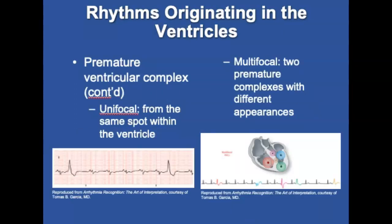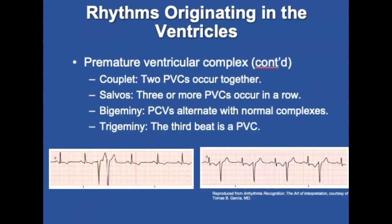A PVC may be unifocal — originating from the same area within the ventricle and looking alike — or multifocal, varying in appearance with more than one focus initiating the ventricular impulse. A ventricular couplet is two PVCs with no intervening pause. A run of V-tach is three or more PVCs in a row, also called salvos or bursts. Ventricular bigeminy is a pattern where complexes alternate with normal ones: normal, PVC, normal, PVC. Ventricular trigeminy is every third beat being a PVC: normal, normal, PVC.